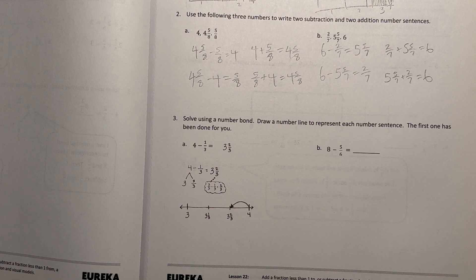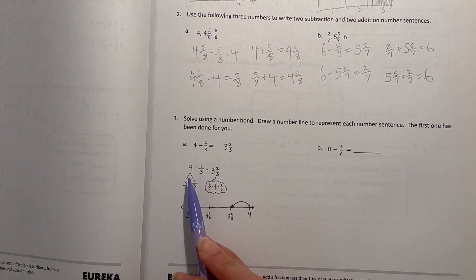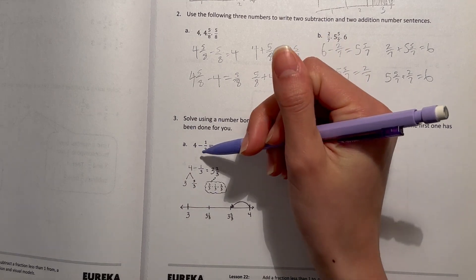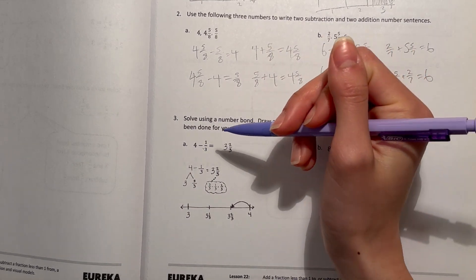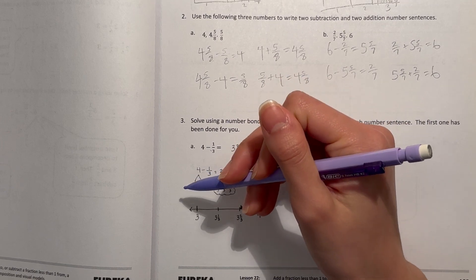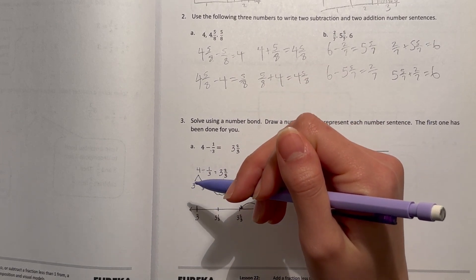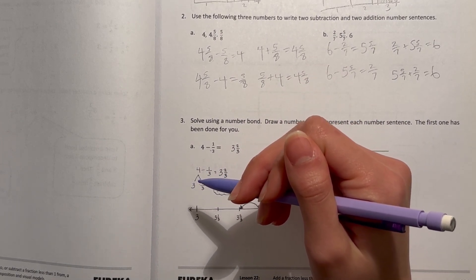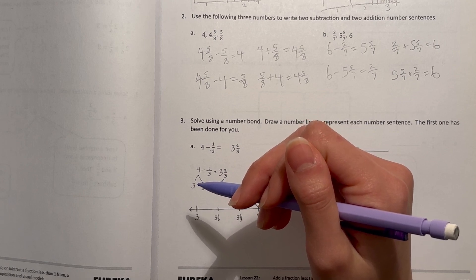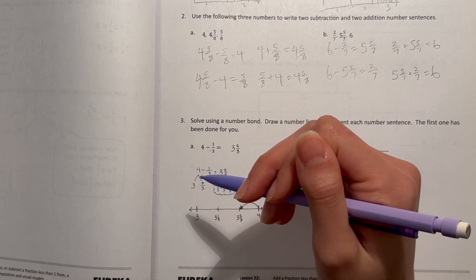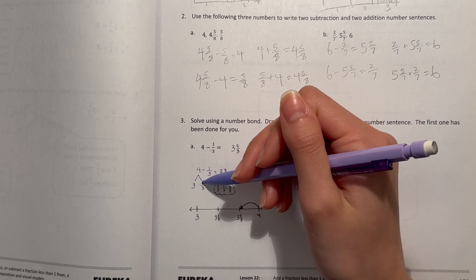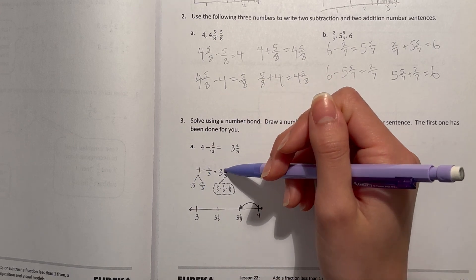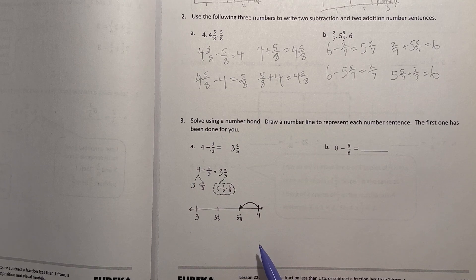So, all right, A, 4 minus 1 third. So for that 4 minus 1 third, they first took out a whole from the 4, because we're minusing 1 third, and 1 third of the denominator is 3. So they took out 3 thirds, which is 1, and that'll give them 3 left, because 4 minus 1 is 3. So then, that's 3 and 3 thirds minus 1 third is 2 thirds, so that's 3 and 2 thirds. And they just did a little number line.